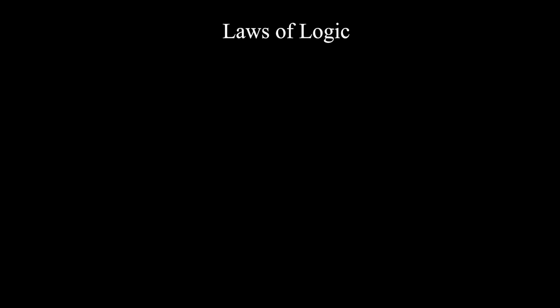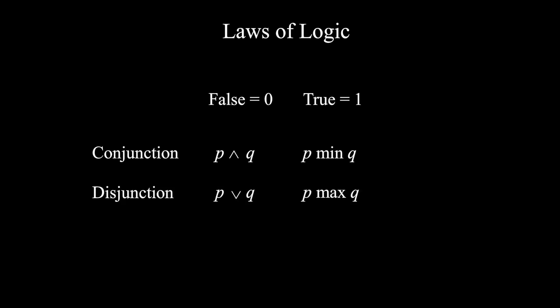Next, we are going to see these laws, and mention how you can understand or memorize them. The link of the list of the laws of logic is in the description below. Consider for logic values 0 and 1, the conjunction p and q is the minimum values of p and q. And the disjunction p or q is the maximum values of p and q.